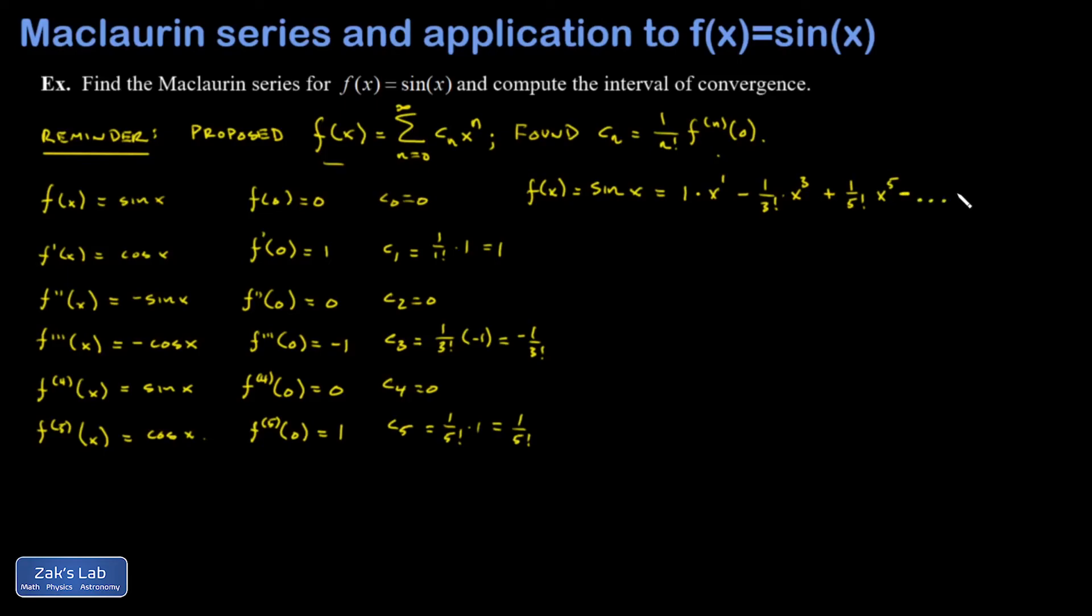It looks like an x to the n over n factorial thing, except it's alternating and it's only the odd term. So it's going to be a little tricky to write down in summation notation. I want to start out with a positive here. So that's going to be like a negative 1 to the n. When I plug in 0, I get a 1 out of that. I plug in 1, I get a minus sign out of it. So that's good.